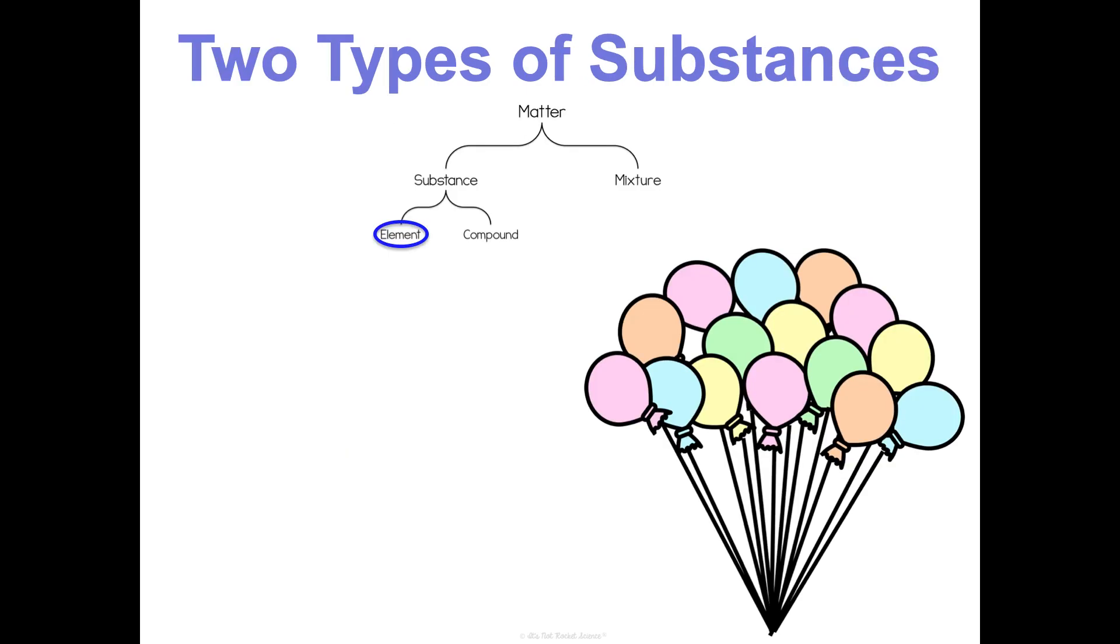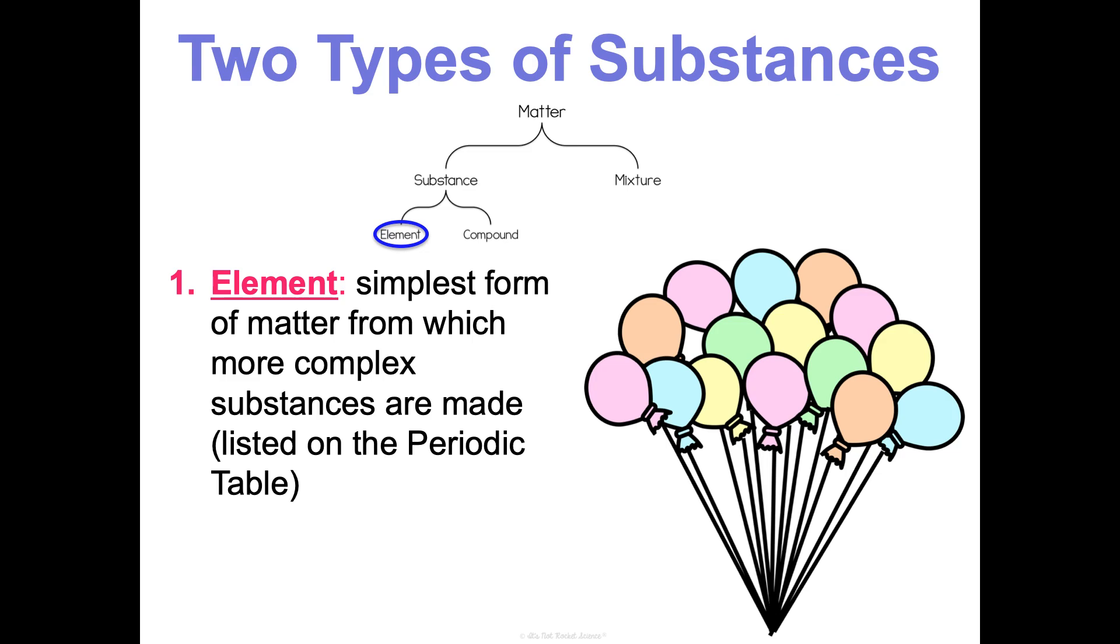Let's zoom in on types of substances. First and foremost, you have elements. These are the simplest form of matter from which we make more complex substances. Elements are found on the periodic table that lists all of the elements that we know. And all of the atoms that make up an element are alike. They have the same number of protons because that is what defines an atom as the element that it is.